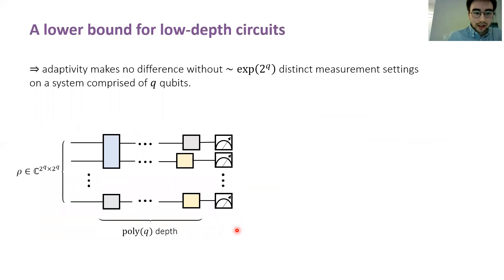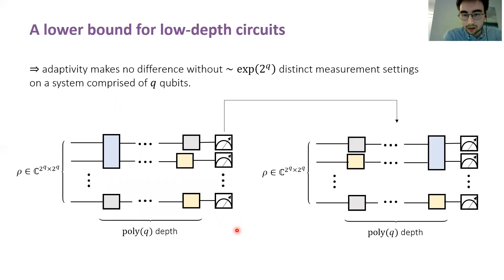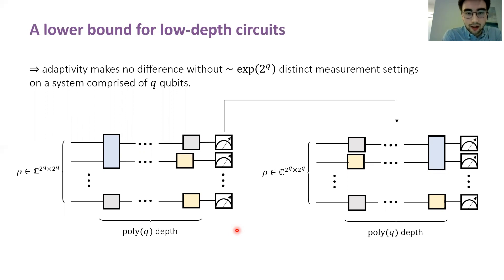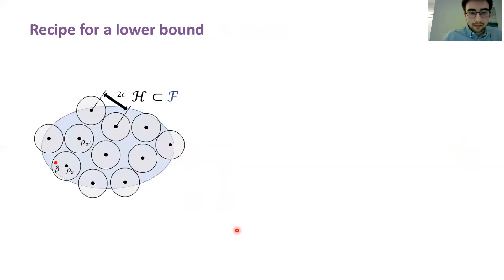One might imagine that your strategy for tomography is to implement a measurement using some quantum circuit with depth that grows polynomially in the number of qubits, and then, using the measurement outcomes obtained, pick a different circuit in the next iteration and so on. What our lower bound says is that you can't do better than d-cubed copies using any such strategy. In particular, this means that the random Clifford strategy is optimal amongst all strategies implementable using depth-polynomial circuits, even if you allow them to be adaptive.